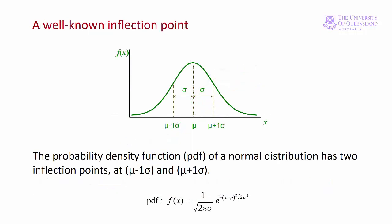An inflection point that you will most likely have come across before, perhaps without knowing it, is the so-called bell-shaped curve, or more precisely, the probability density function for a normal distribution. The probability density function, or PDF, is the line that defines the normal distribution. This is the actual function here.